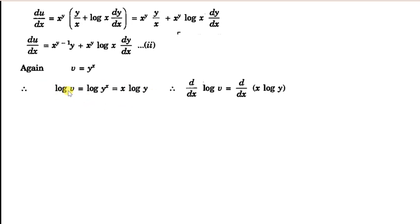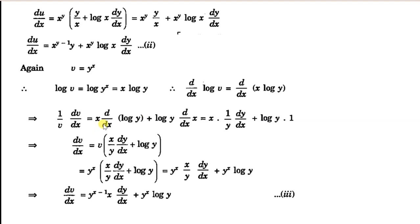On the left hand side, first we differentiate with respect to v, giving 1 by v, and then multiply with dv by dx using the chain rule. On the right hand side, we use the product rule: first function x as it is, times the derivative of log y, which by chain rule is 1 by y times dy by dx, plus the second function log y times the derivative of x, which is 1. Transposing v to the right and substituting y raised to x, and since the base is the same, powers can be subtracted, giving y raised to x minus 1 times x times dy by dx plus y raised to x times log y.